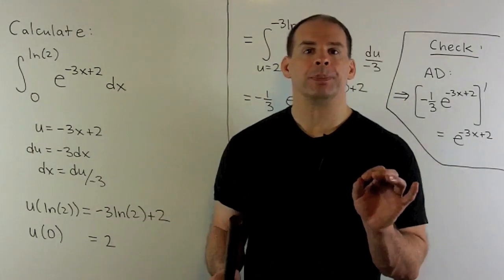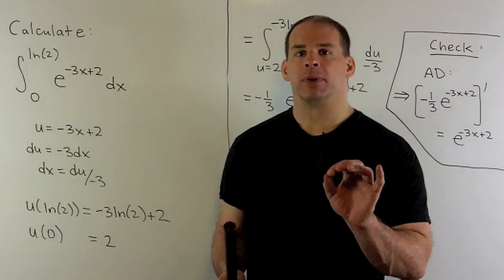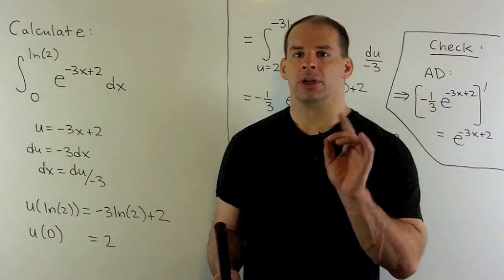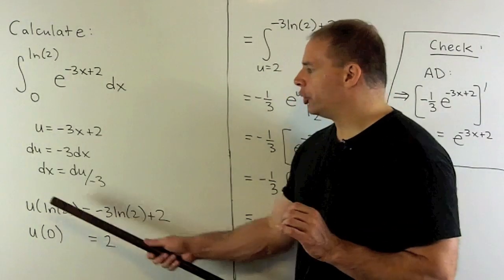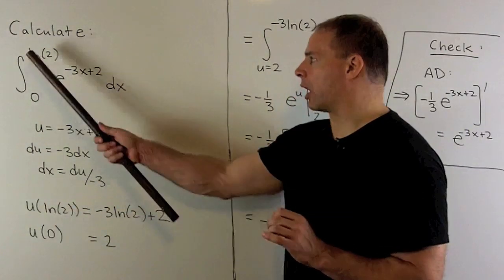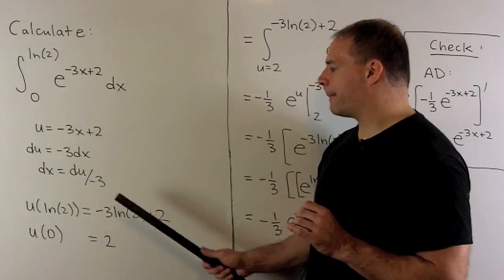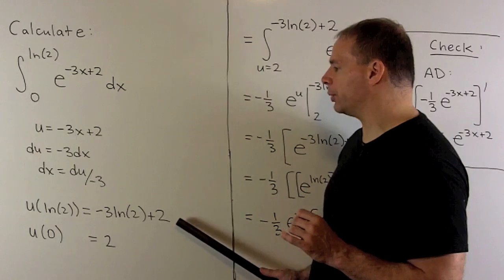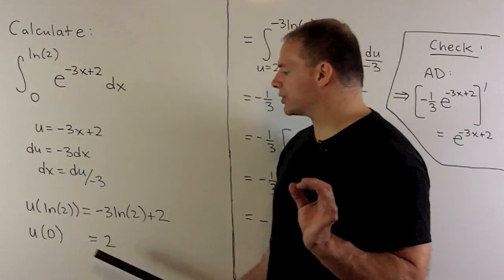For here, when we evaluate, we'll just put everything over in terms of u. So I'll also have u of natural log of 2, our upper limit. It's going to be equal to minus 3 natural log of 2 plus 2. u of 0 is going to be equal to 2.